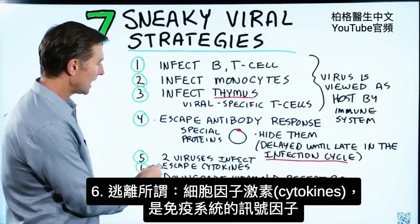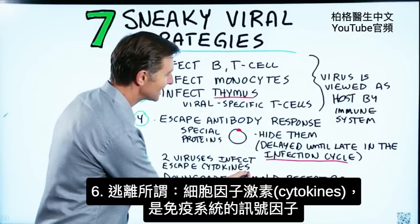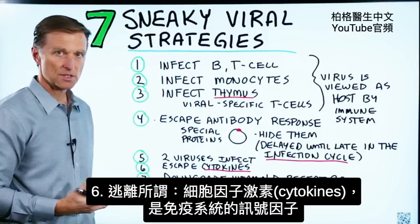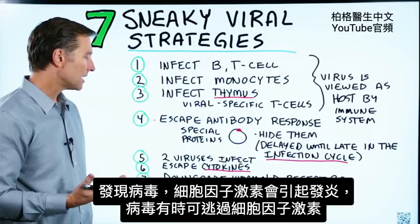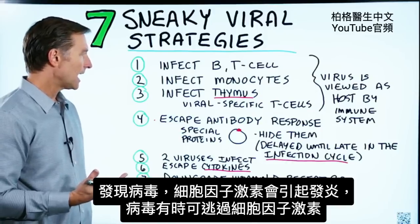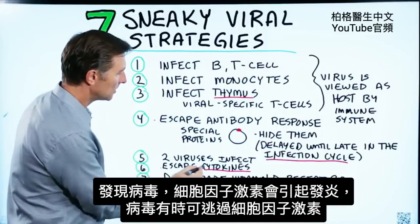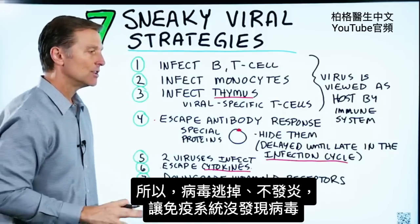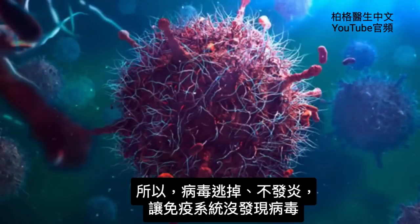Number six: escaping what's called cytokines, which are signaling molecules for the immune system. They're involved in inflammatory responses, and viruses can sometimes escape these, so there's no inflammation — nothing for your immune system to indicate that there's a virus there.